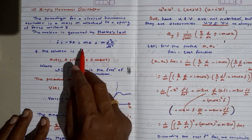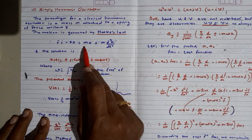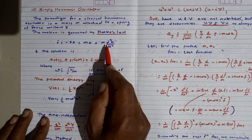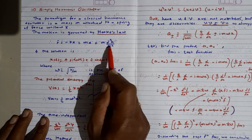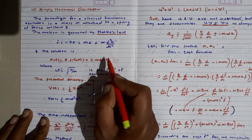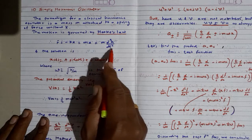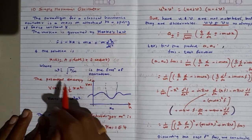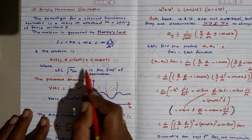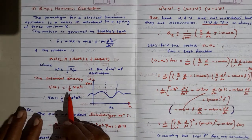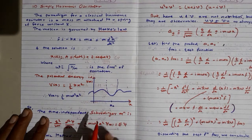We equate F = -kx to mass times acceleration, giving m d²x/dt² = -kx. Solving this second-order differential equation, the solution is x(t) = A sin(ωt) + B cos(ωt), where ω = √(k/m) is the frequency of oscillation.